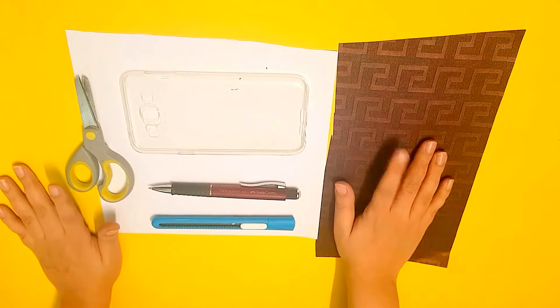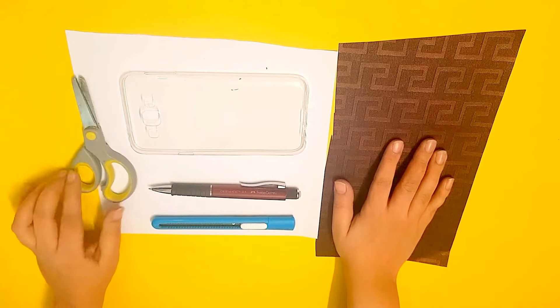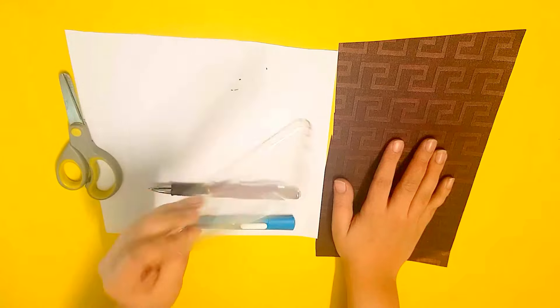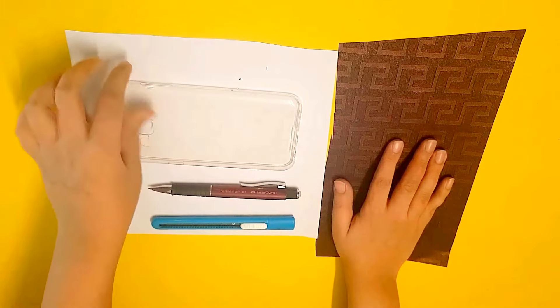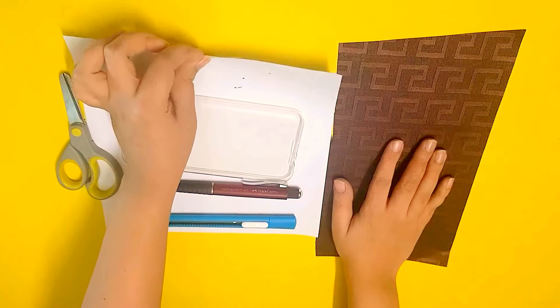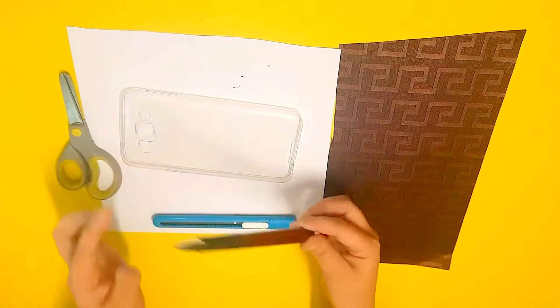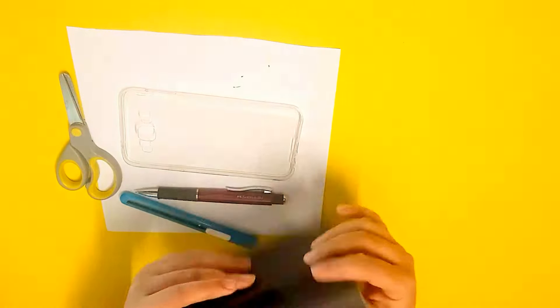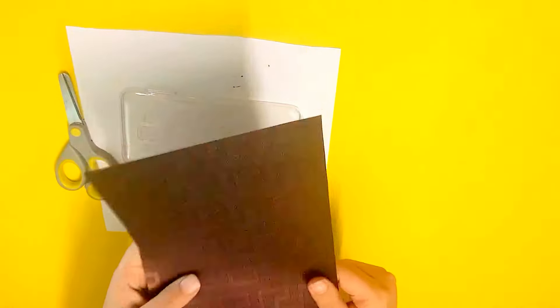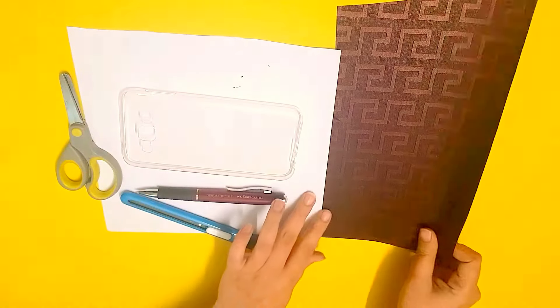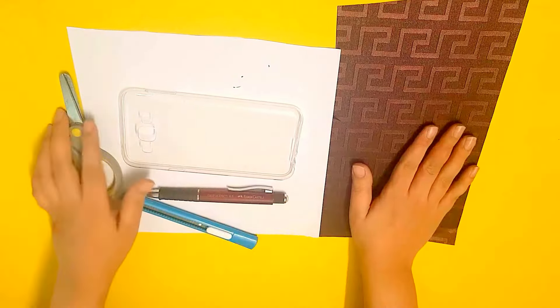For this first idea, the supplies that you will need is a pair of scissors, your plain silicone clear cover, a simple plain sheet of paper. This can be any paper, scrap paper, white paper, printer paper, any paper you want. A pencil, a cutter, and this is just a wrapping paper. This literally is just the gift wrapping paper I could find at the local shop here. So let's get into it.